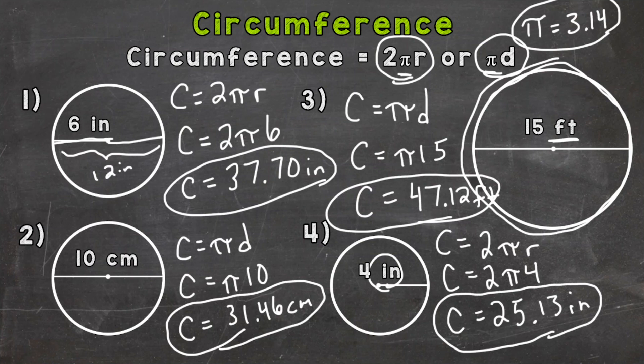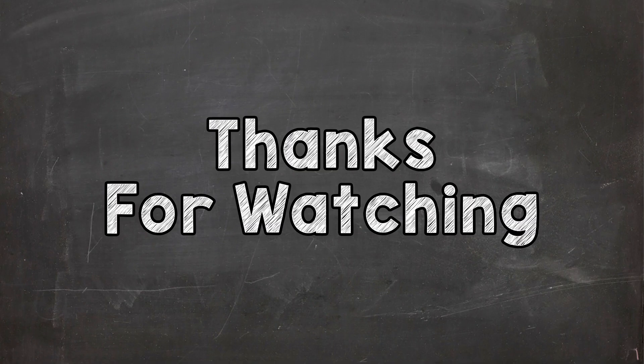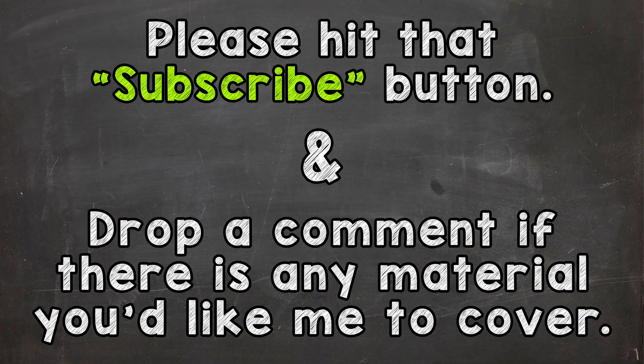So there you have it. That's how you calculate circumference. You have two formulas to use there. You can use the radius or diameter, 2 times pi times the radius, or pi times the diameter. Hopefully that was helpful. Until next time, peace.